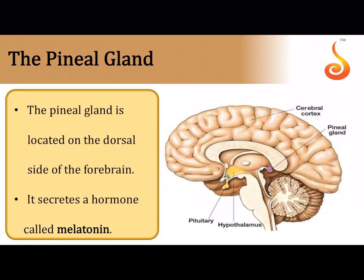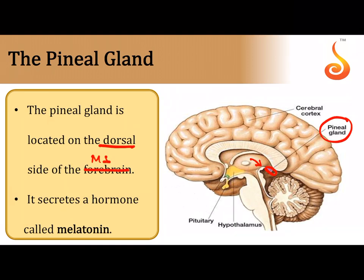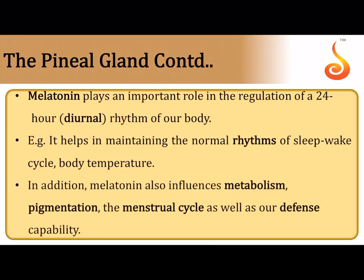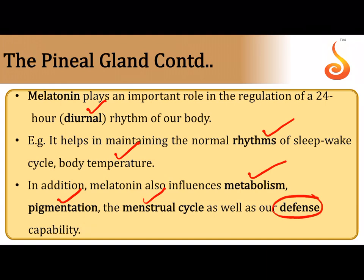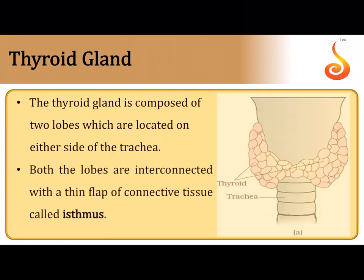The pineal gland is situated on the dorsal side of the forebrain, just above the corpora quadrigemina. It secretes melatonin, which regulates the 24-hour rhythm in the body — the 12-hour day and 12-hour night cycle. Melatonin also regulates the sleep-wake cycle, body temperature, metabolism, and pigmentation, and in females it regulates the menstrual cycle and plays a role in the defense mechanism or immunity.